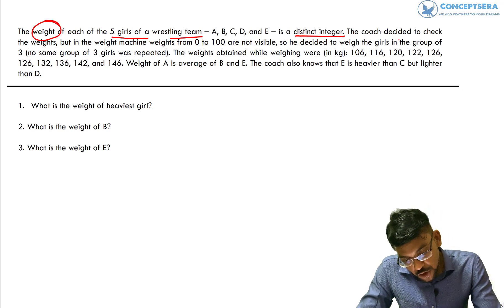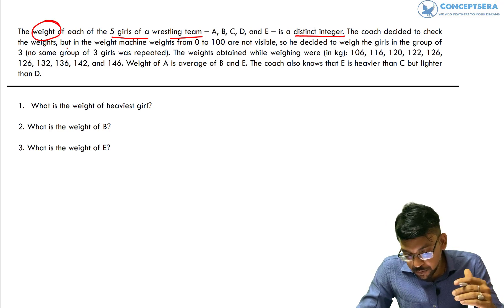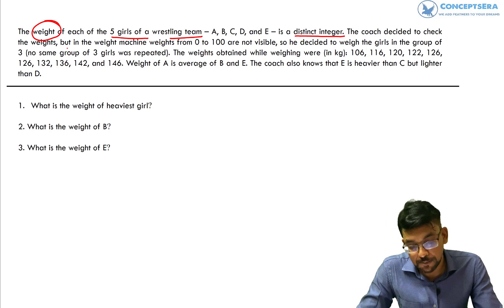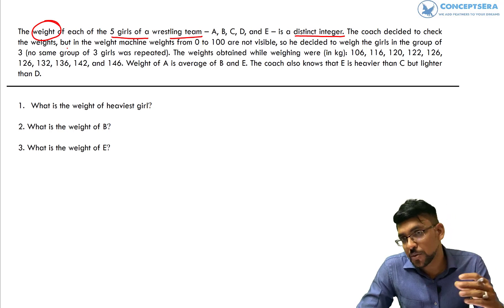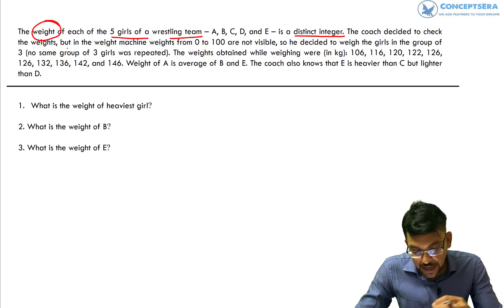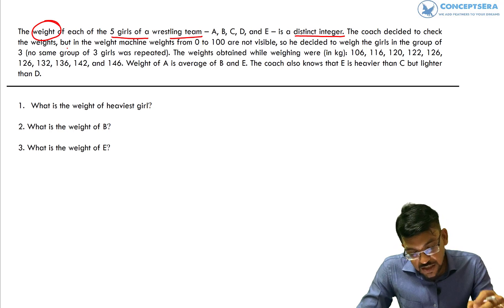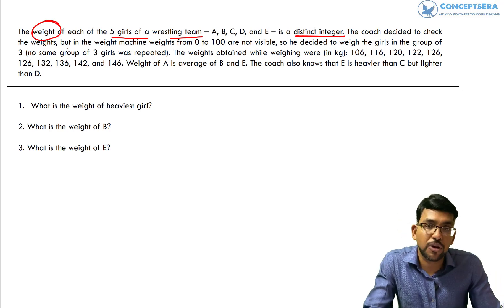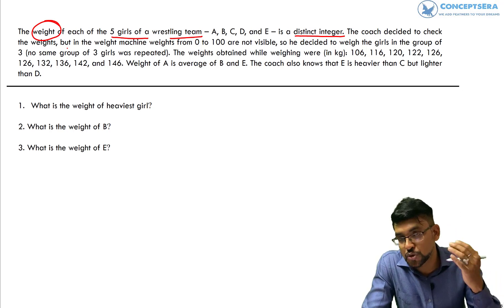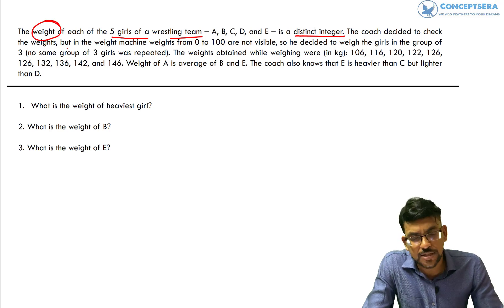Further, they are saying the coach decided to check weights, but in the weight machine, numbers from 0 to 100 are not visible. So we cannot see numbers from 0 to 100; only numbers greater than 100 are visible. So he came up with a new idea — he decided to weigh the girls in groups of three. We are making groups of three and calculating the weight of three girls together. Finally, they are giving some information about what weights were obtained, along with some clues.